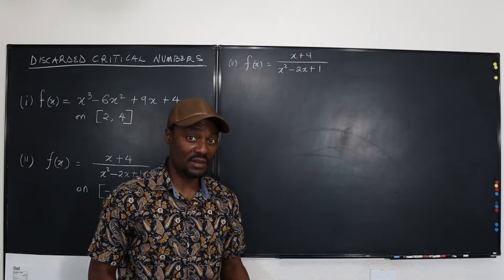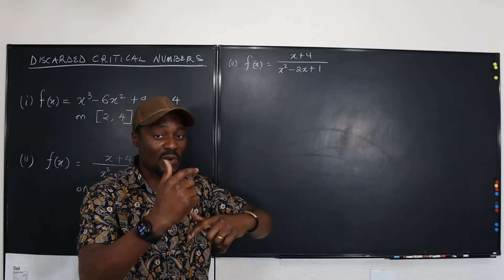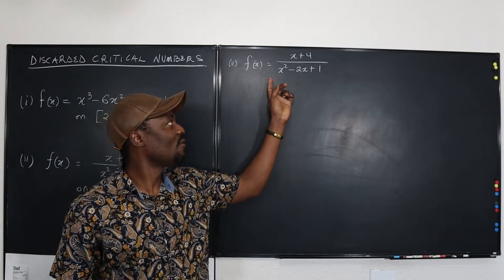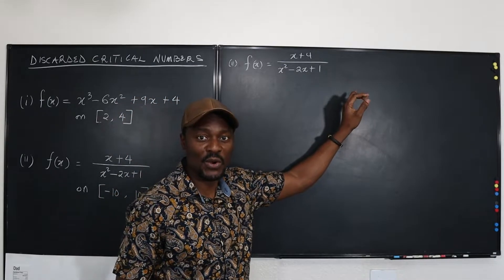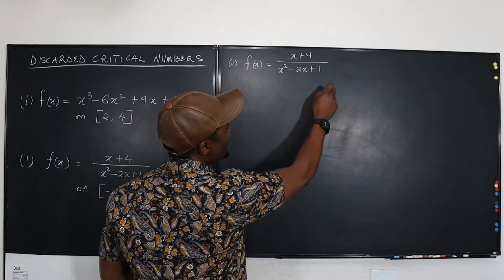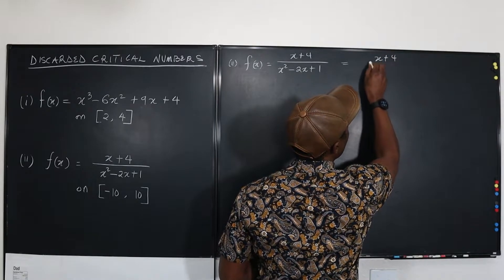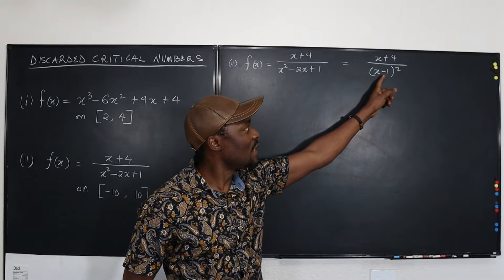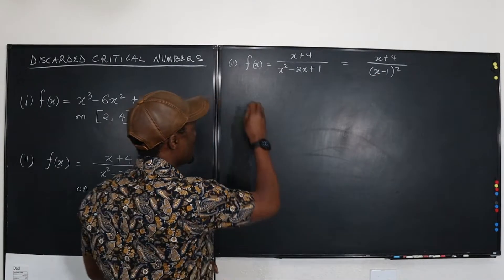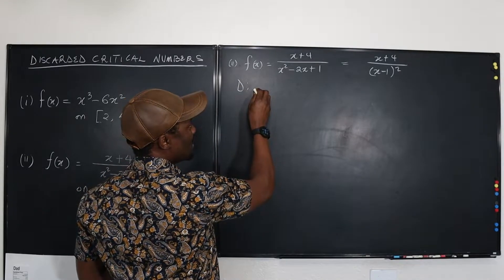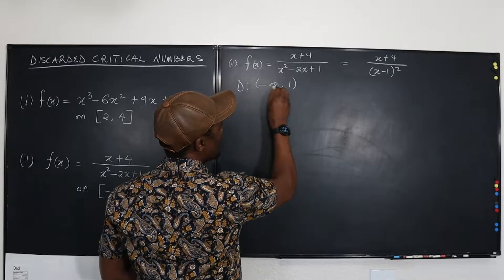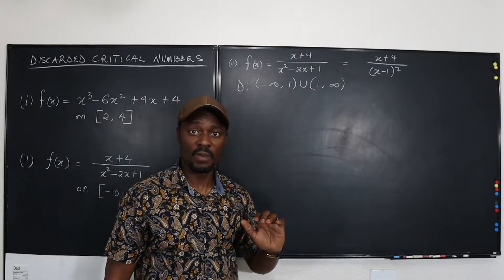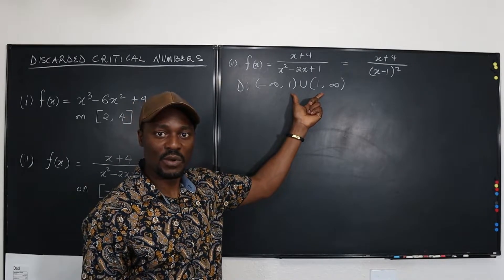For the second example, let's first find the domain. For all rational functions, the domain is from negative infinity to positive infinity except for values of x that make the function undefined. This function is x plus four over x minus one squared, which is x minus one times x minus one. So x cannot equal one. The domain is negative infinity to one, union one to positive infinity — meaning x equals one must be excluded.